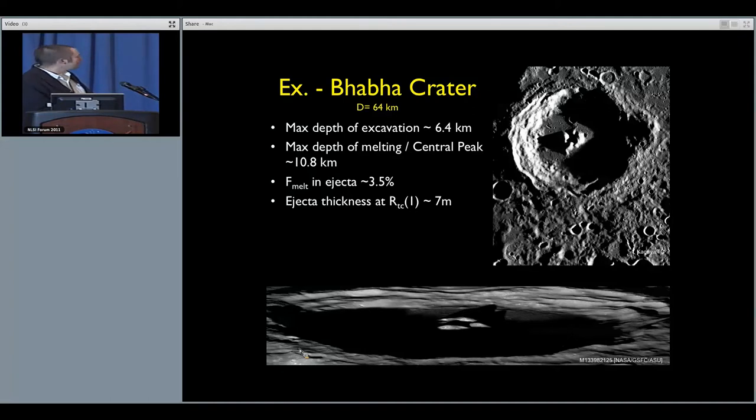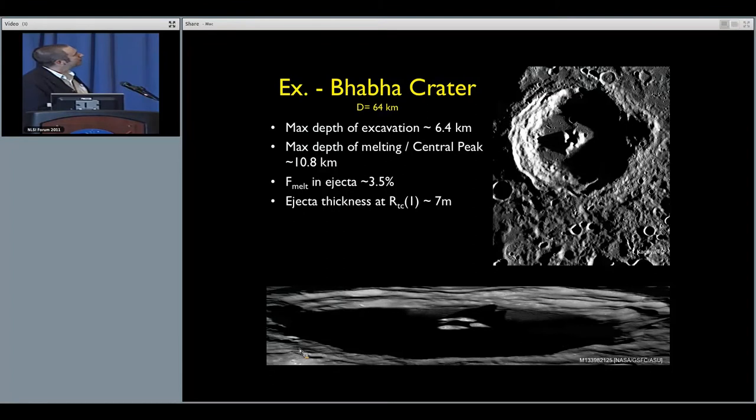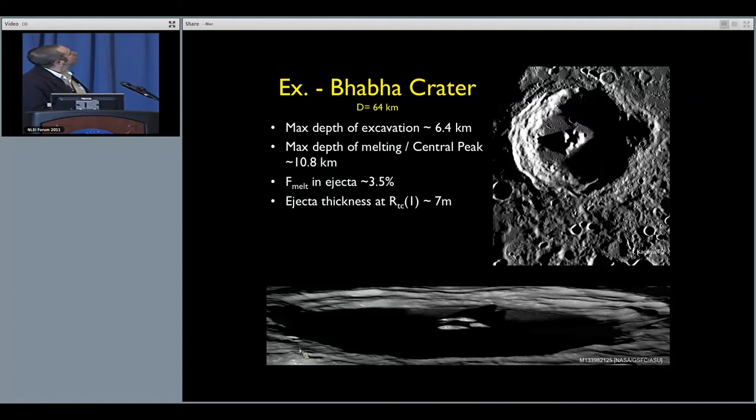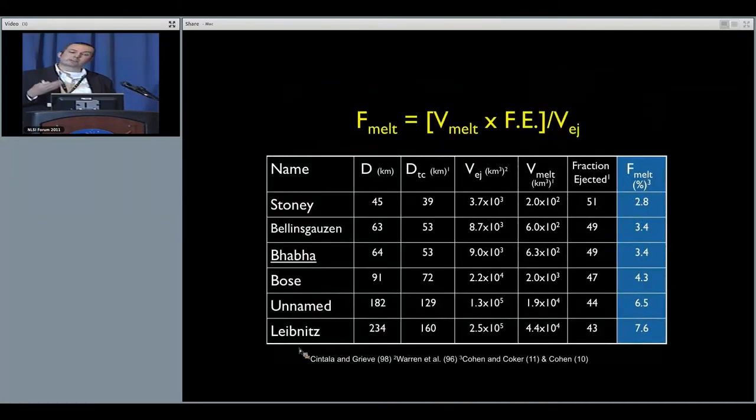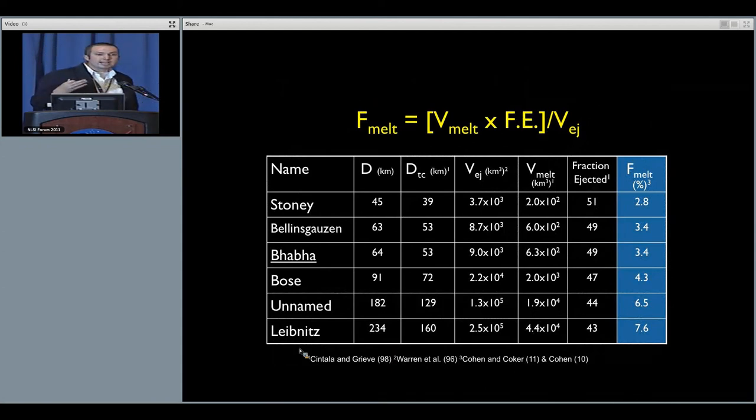What we see for a crater, even as big or as small depending on how you're thinking about it, it's not actually distributing and ejecting a lot of its own impact melt. It's going to be redistributing the target material, and we would contend that target material is mostly SPA impact melt. For a number of craters, and this is just an example of the craters that I looked at, the fraction of melt is all relatively small, even up to the largest crater in the interior Leibniz. Only about eight percent of its ejecta would be its own impact melt. Most of the ejecta there would be retained.